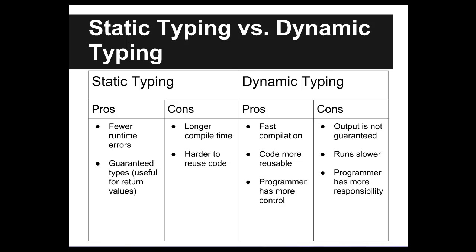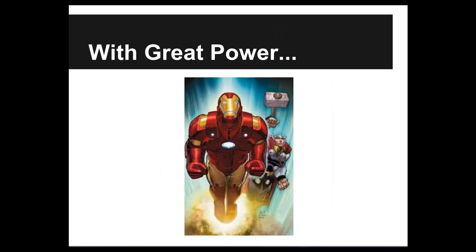Dynamic typing takes a much different approach where all the type checking occurs during runtime. Therefore, it has a much faster compile time and the programmer can more easily manipulate the program semantics without major changes to the code. However, with great power comes great responsibility.